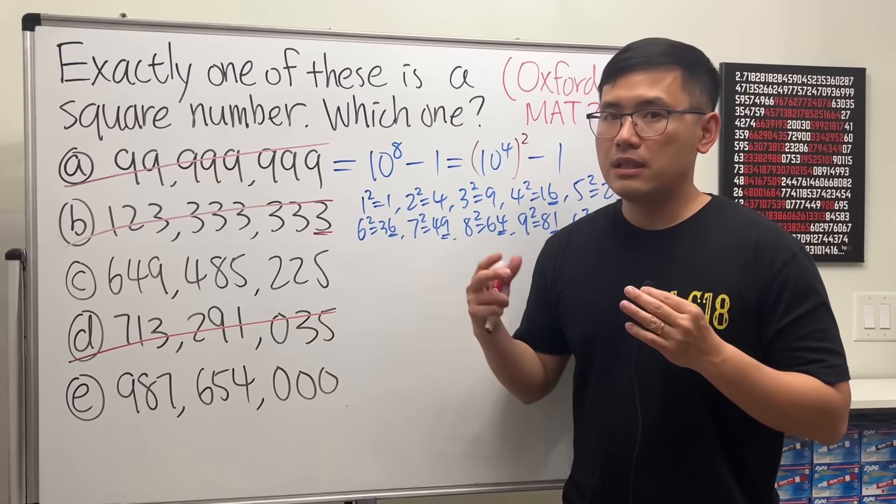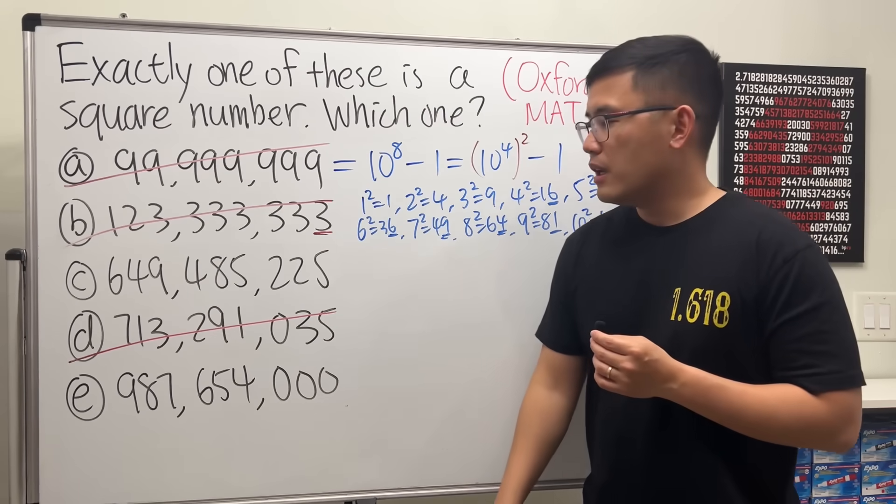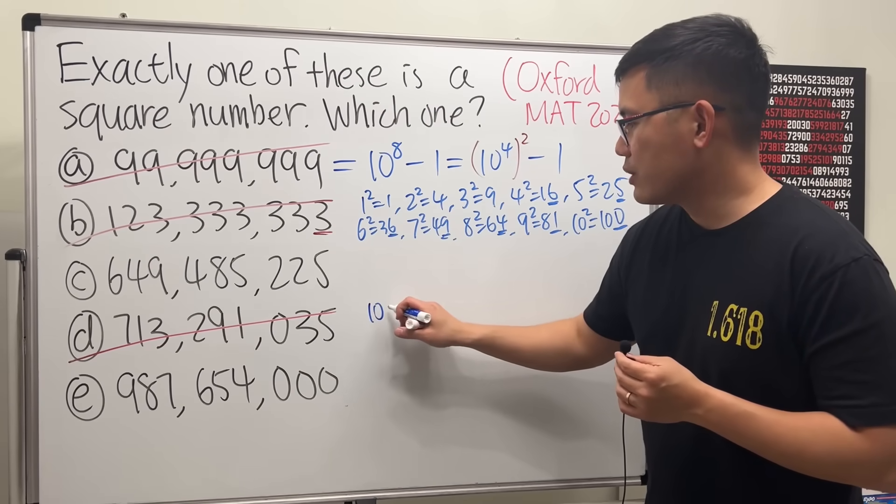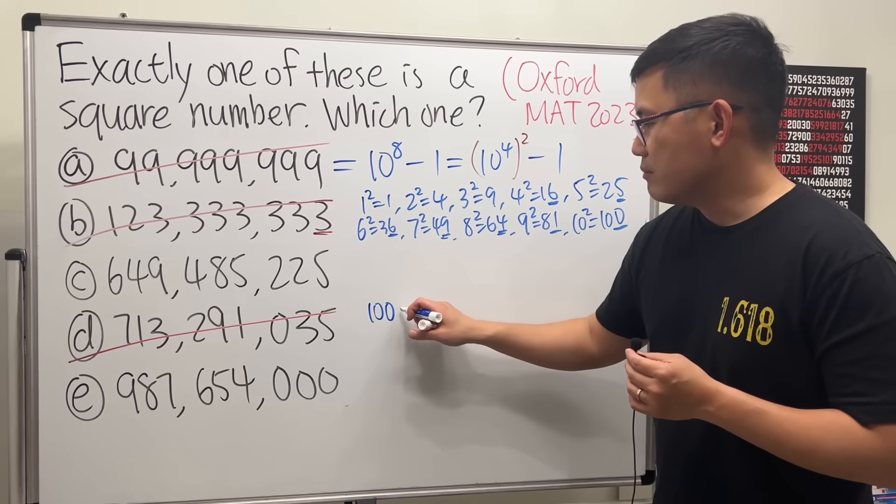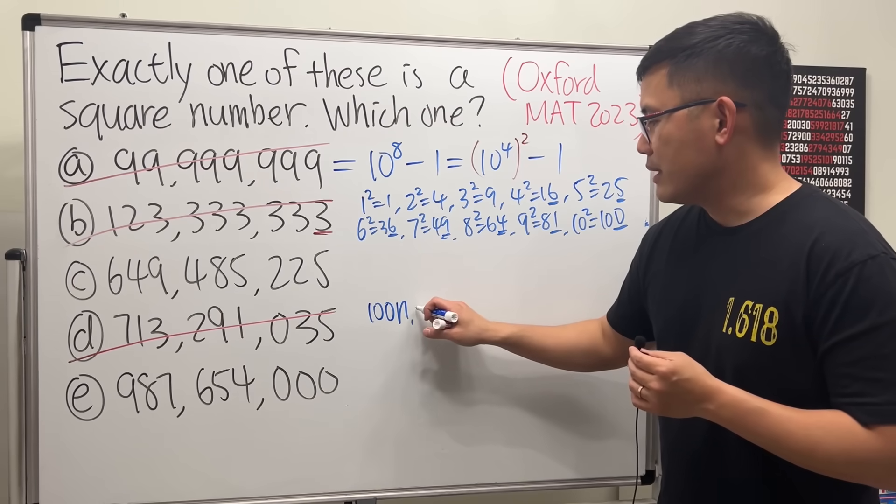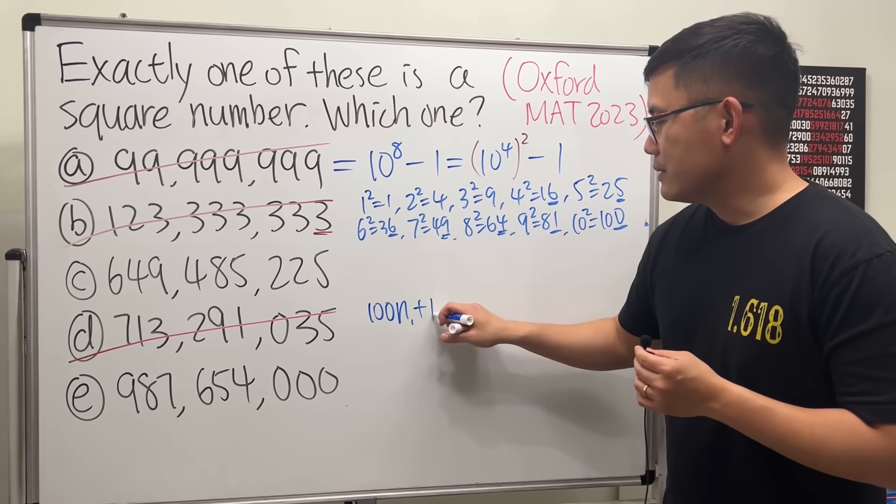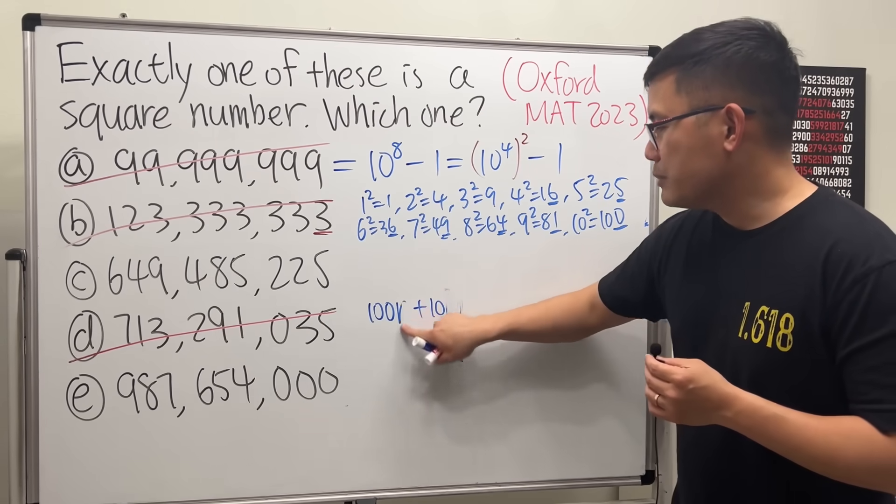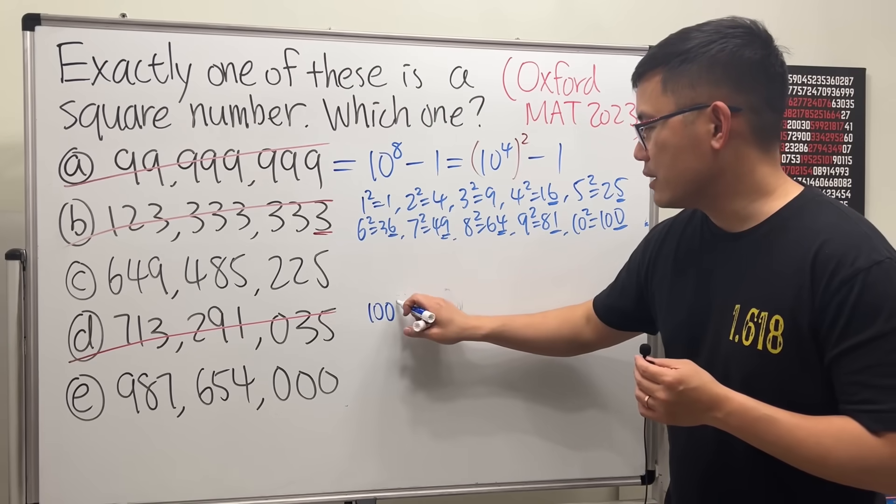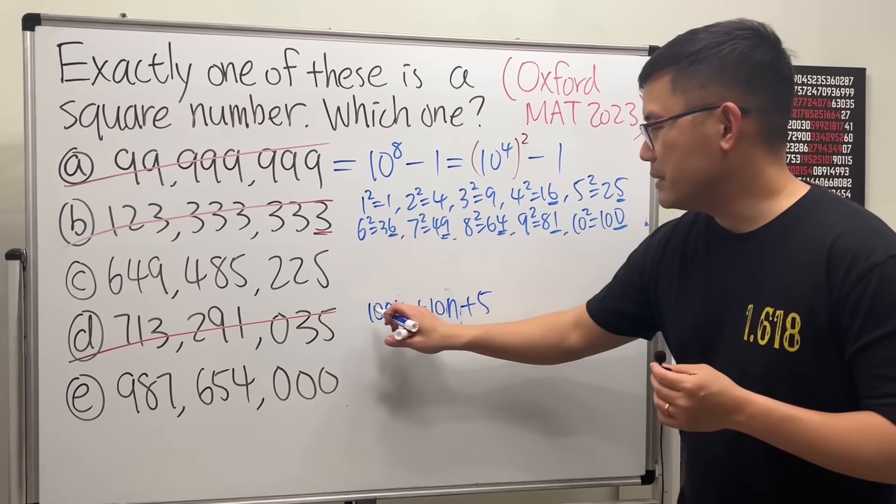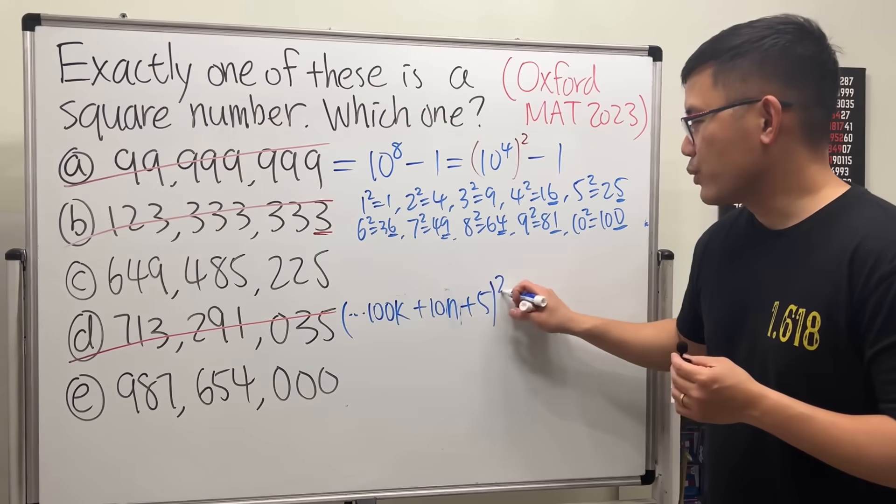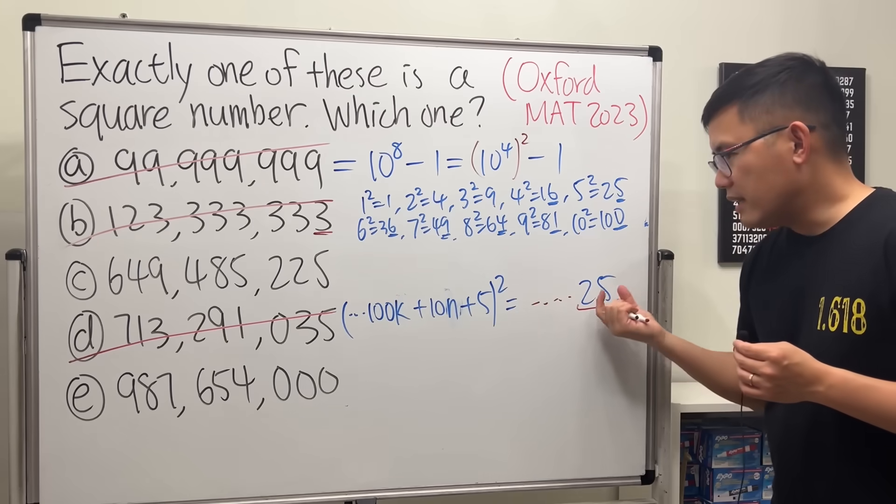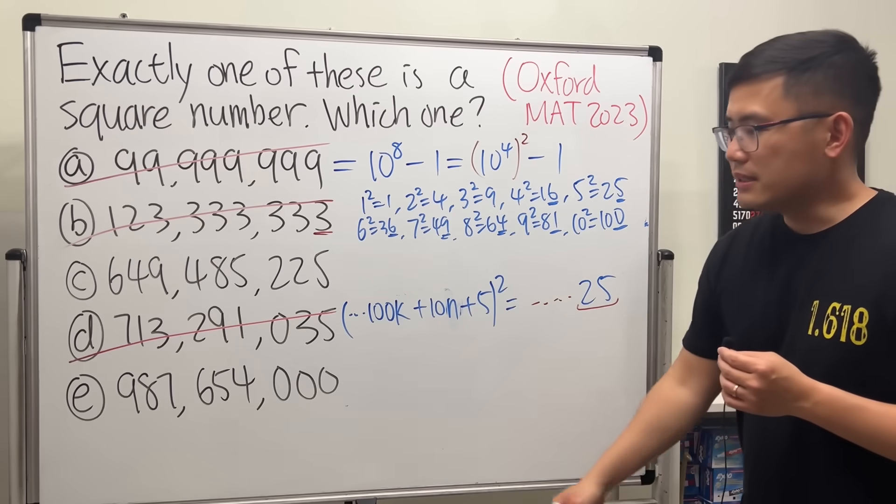And the reason is because if a number ends with a five, that means it has to be a multiple of five. So just imagine the following: I have, let's say, 100 some number—let's say n1, and then plus 10 and n2 and so on—let's say k, and like this, and then five, and maybe some in the front too, and then you square that. So have a look—it ends with 25, it's not possible to end with 35. No.